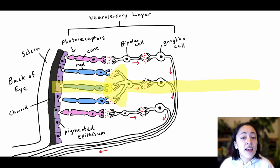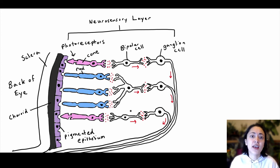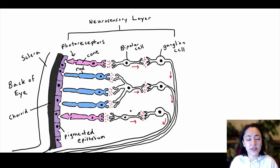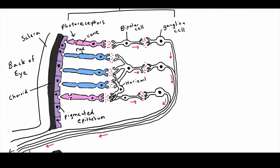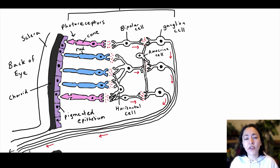The pigmented epithelium and choroid prevent light from scattering throughout the eye — if that light scattered it would lower your visual acuity. There are also two regulatory neurons found in the neurosensory layer called the horizontal cells and amacrine cells. These help to modify the communication between the photoreceptors, bipolar cells, and ganglion cells. They improve contrast, increase detection of visual patterns, and help to either increase or decrease the sensitivity of the rod cells.